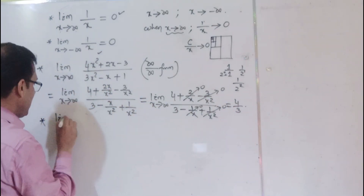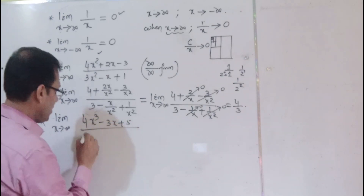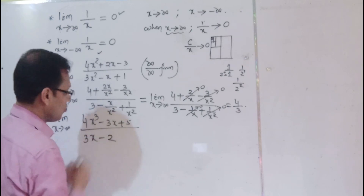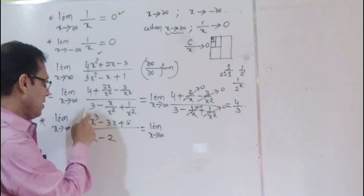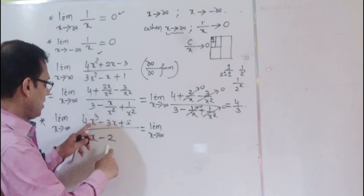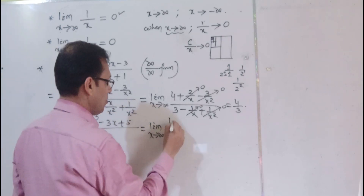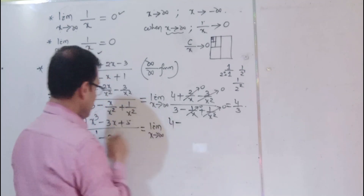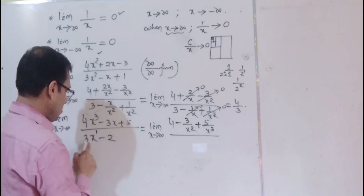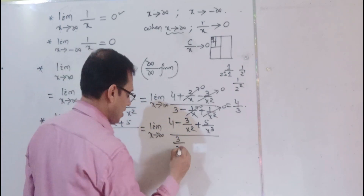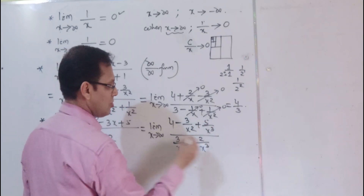Let's take another example: limit x tends to infinity of (4x³ - 3x + 5) divided by (3x - 2). This is again an infinity by infinity form. The highest degree here is x³, so we divide everything by x³. The numerator gives (4 - 3/x² + 5/x³) and the denominator gives (3/x² - 2/x³), which tends to 0.